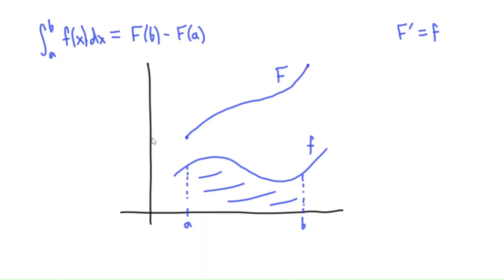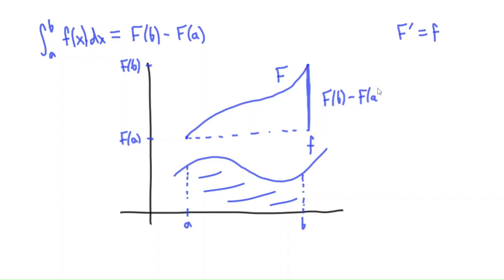This left endpoint here is at a comma F of a, so let's write in capital F of a. And up here, this would be F of b. Now let's draw a dotted line here — this vertical distance is F of b minus F of a, capital F of b minus capital F of a. Notice this is just the right-hand side of the fundamental theorem of calculus. So geometrically, the theorem says this area is equal to this length — the area under the curve equals the amount that the antiderivative function rises between the two endpoints.